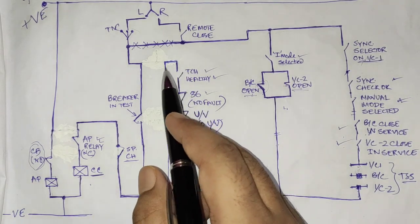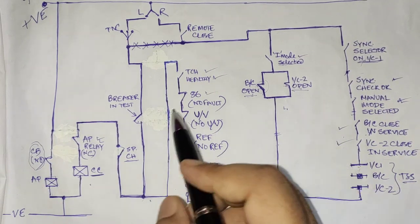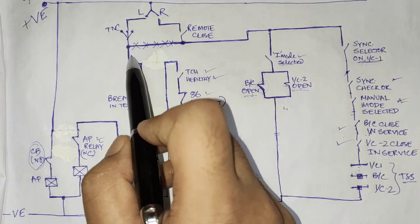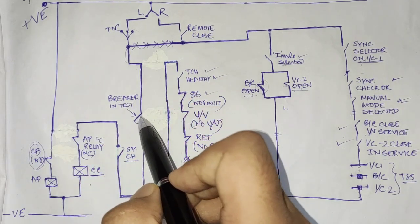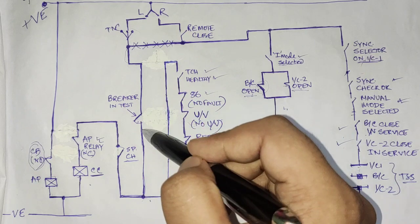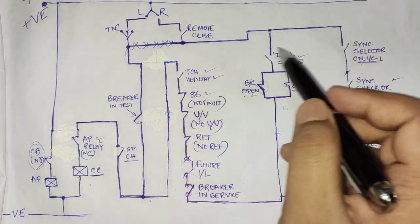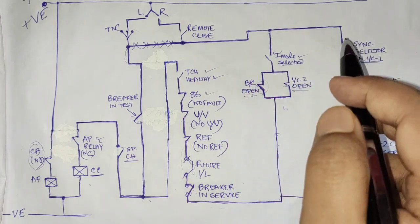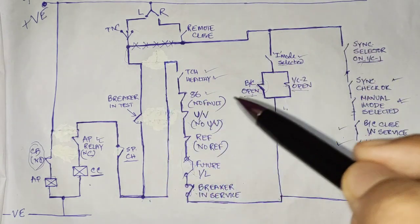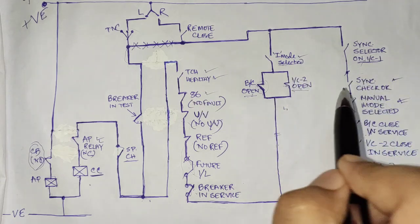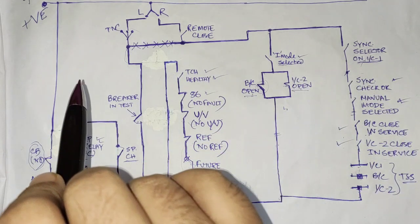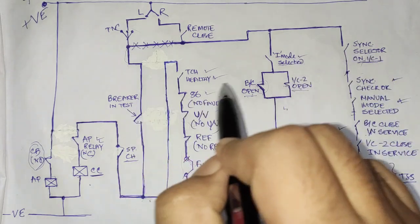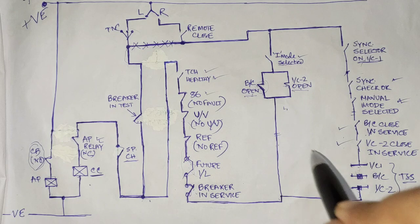Now we consider the breaker in test condition, which takes a separate path. Breaker in test position bypasses all interlocks and condition checks, because in test position we are only checking whether the breaker is closing and opening properly. It has nothing to do with interlock status, relay status, or faults, because breaker in test means the breaker is in racked-out condition.